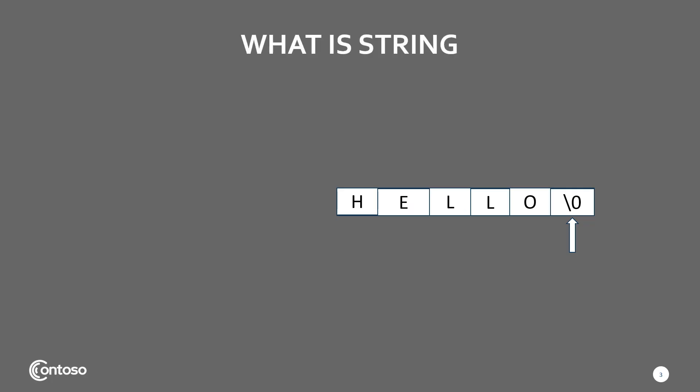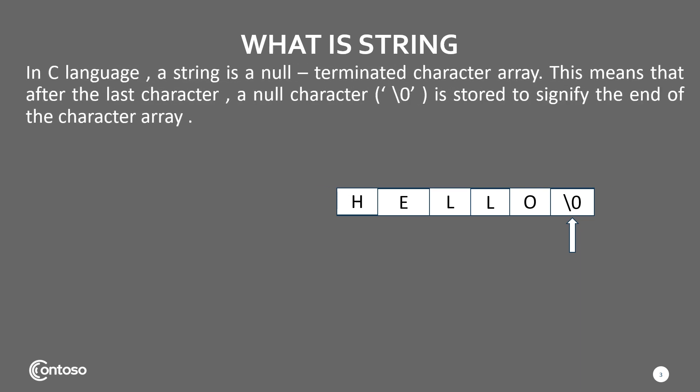Now, as per our content, we will first discuss what is string. In C language, string is a null terminated character array. This means that after the last character, a null character is stored to signify the end of the character array.